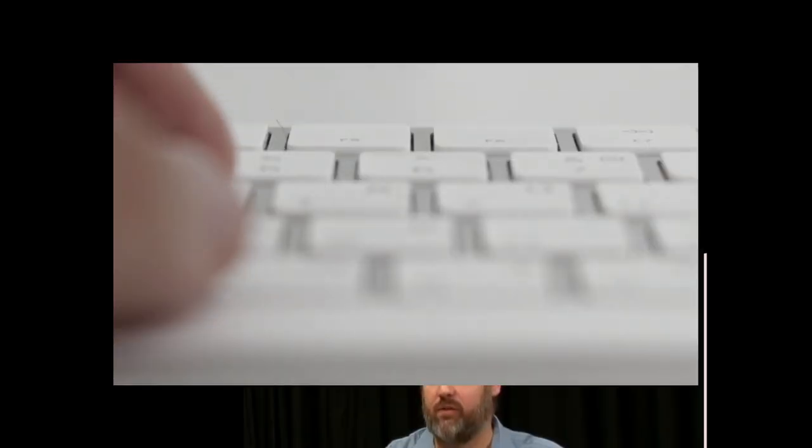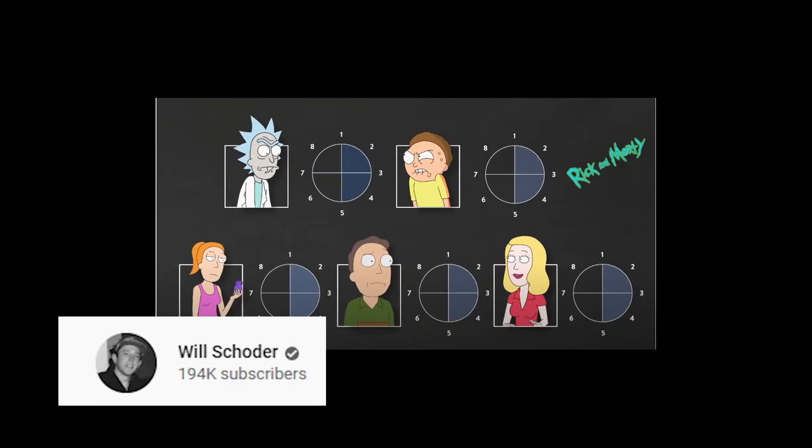Christopher Vogler is not the only one who took up the mantle from Joseph Campbell. Dan Harmon, the co-creator of Rick and Morty, distilled Campbell's monomyth into the story circle — a technique for writers. His simplified hero's journey is made up of eight stages that are much easier to follow, understand and use. If you want to look deeper into his technique, I strongly recommend the video by Will Schroeder on the hero's journey, which you will find in the link below. The basic description is quite self-explanatory: a character is in a zone of comfort but they want something, so they enter an unfamiliar situation, adapt to it, get what they wanted, pay a heavy price for it, and then return to their familiar situation having changed.